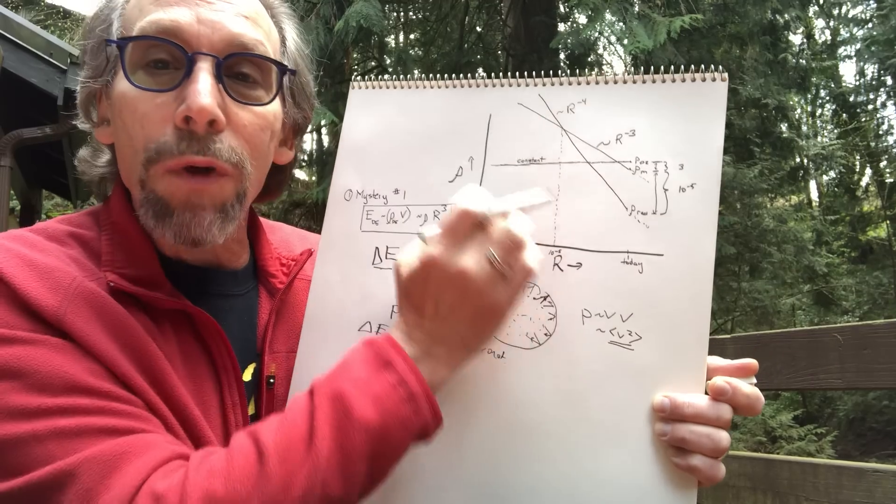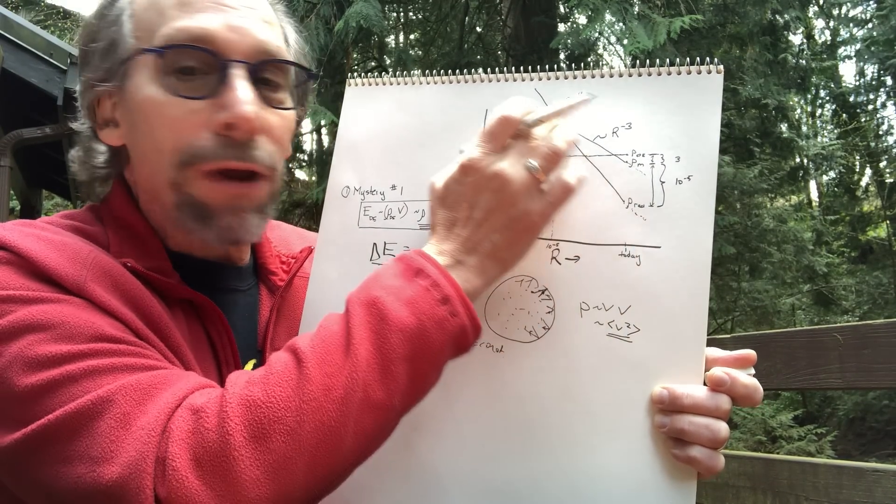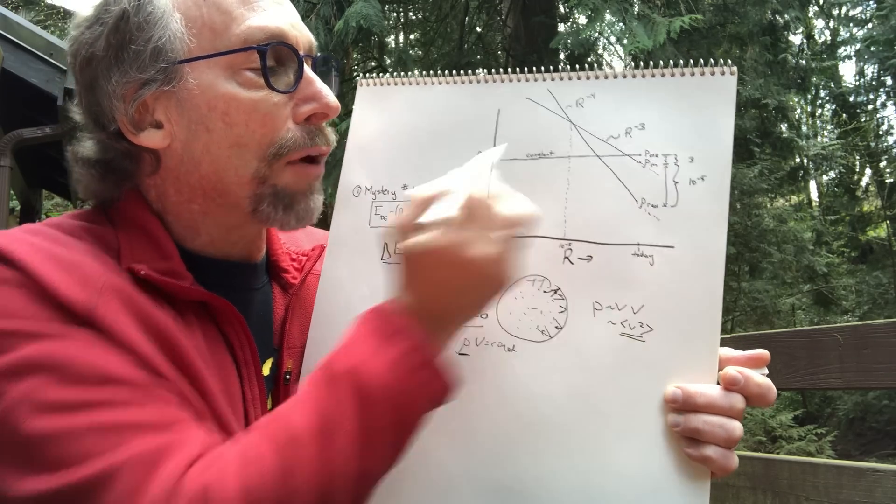So we can understand these two things we derived yesterday a different way. Radiation produces pressure. Matter doesn't. Now we can understand dark energy.